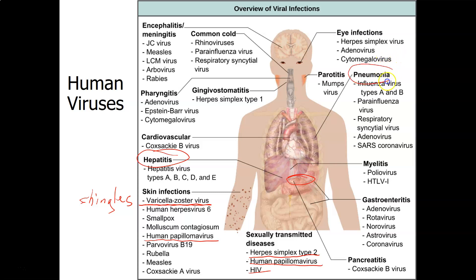Pneumonia is something where your lungs fill up with fluid, and that can be caused by the influenza virus — the flu virus types A and B — para-influenza viruses, which are not technically the flu, respiratory syncytial virus, adenoviruses, and the SARS coronavirus, which is the type of virus responsible for COVID-19. It's also responsible for the SARS epidemic that occurred around 2002 and 2003.